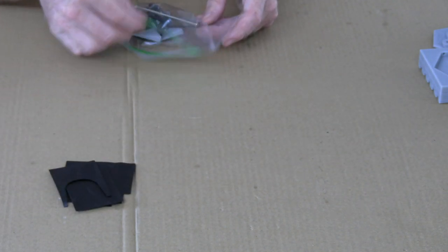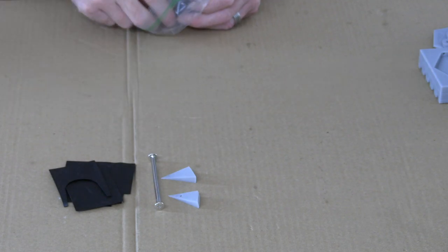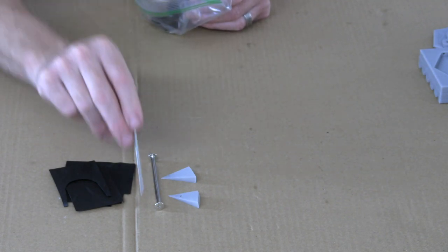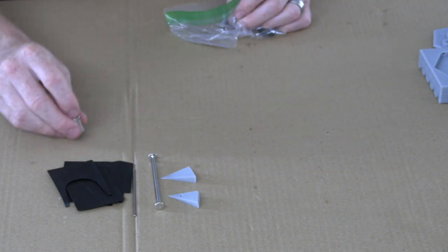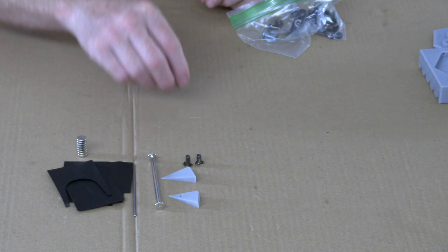Inside that bag of hardware, you're going to get three pieces of cloth, a large hinge pin, two little triangle temple pieces, a small hinge pin, as well as eight magnets.